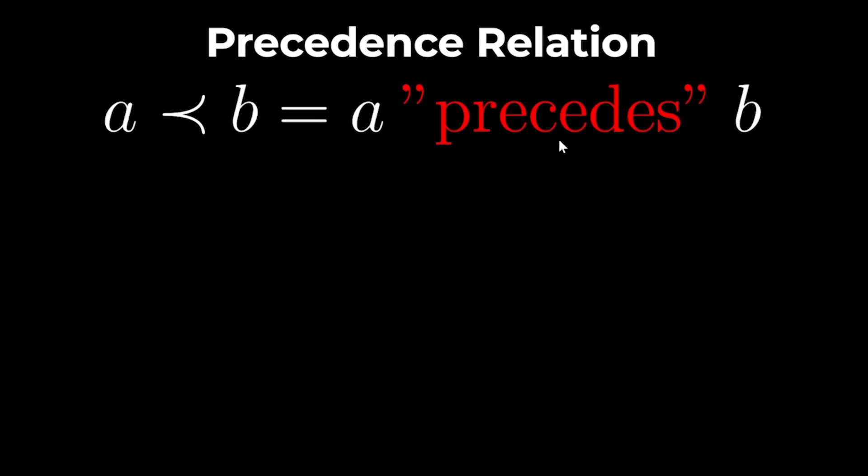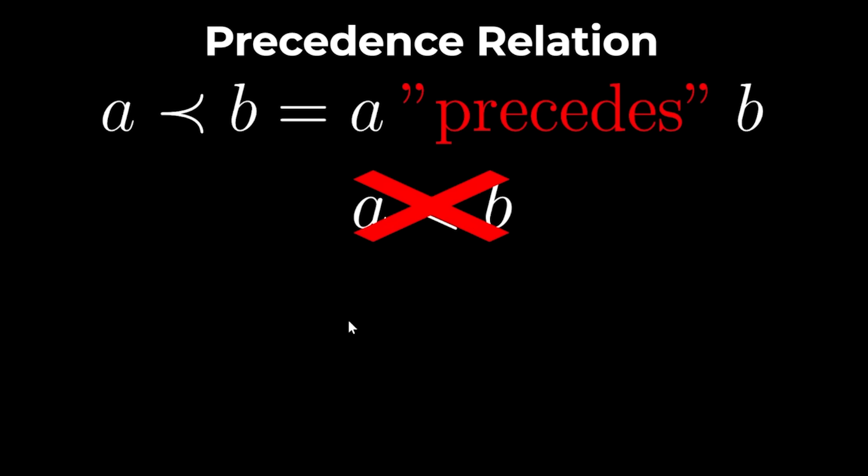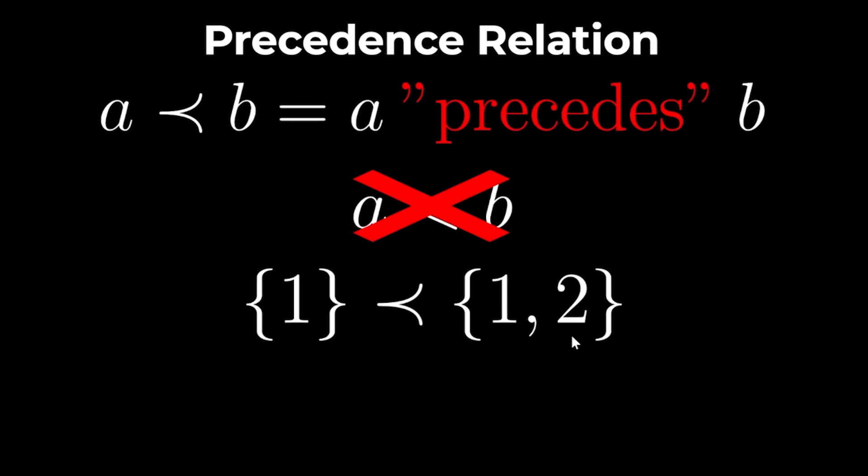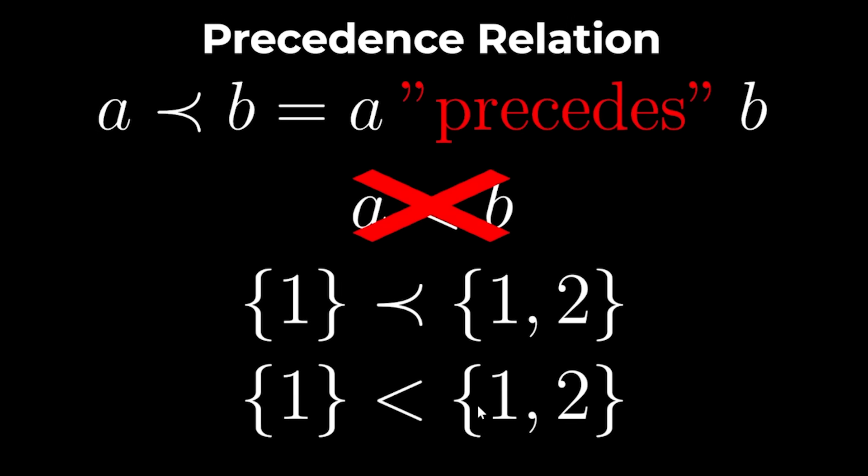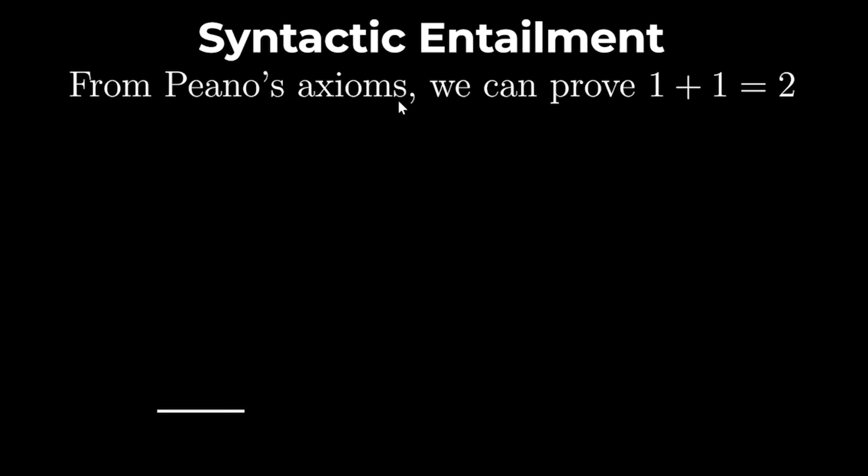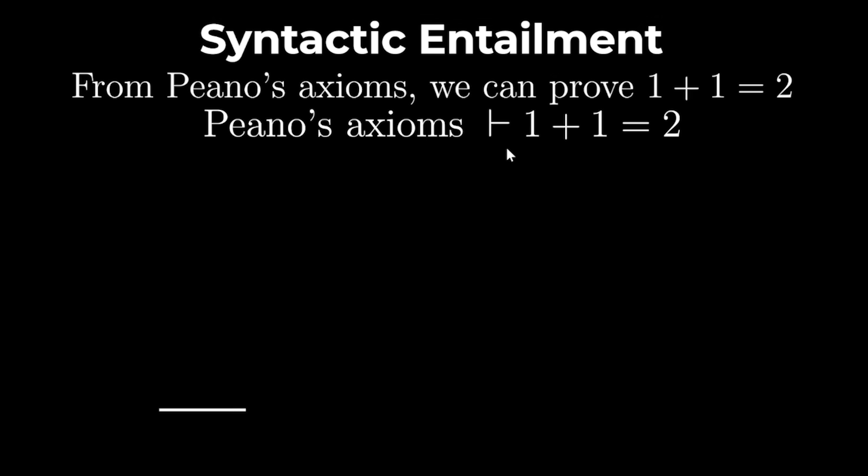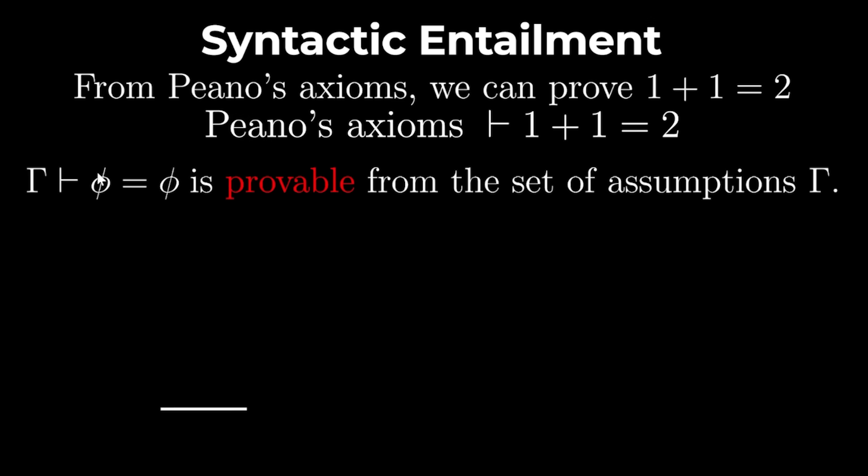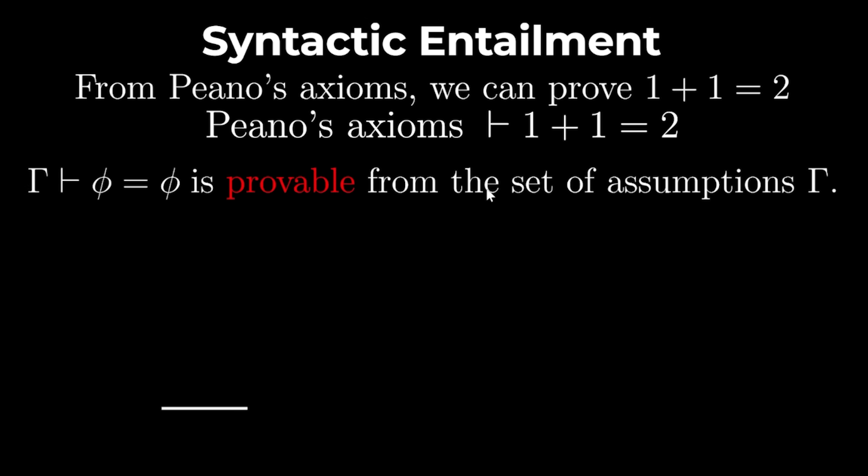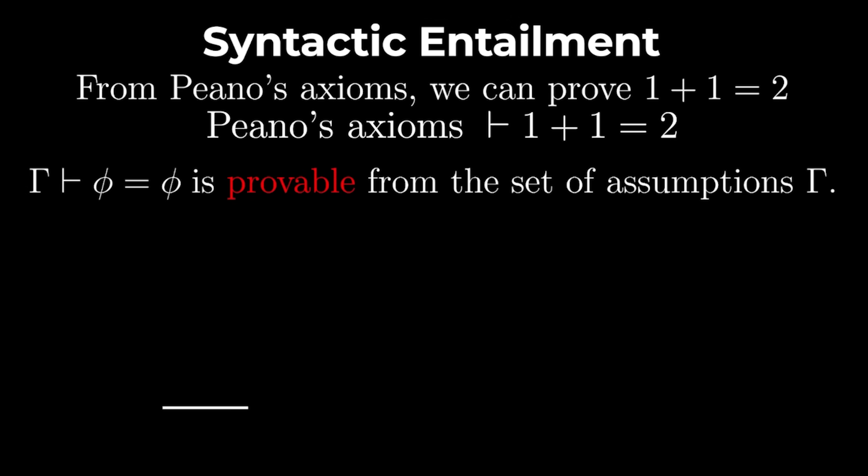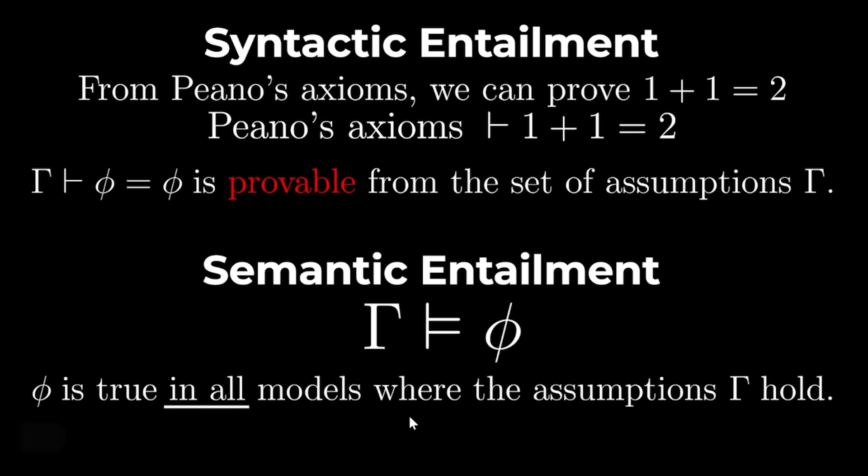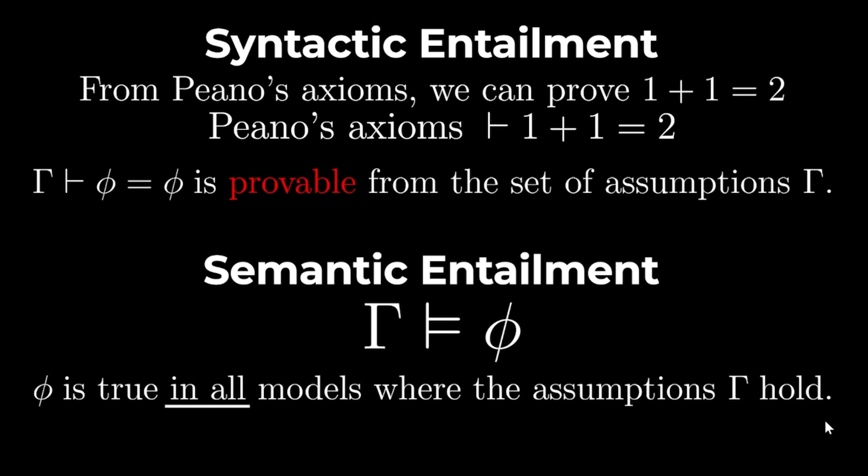If a precedes b, then a is in some way of lower order than b, but it doesn't necessarily mean that a is less than b. For example, we can write the set 1 precedes the set 1, 2, because 1, 2 has more elements. But that doesn't necessarily mean that 1 is less than 1, 2. Instead of saying that from Peano's axioms we can prove 1 plus 1 is 2, we can just say that Peano's axioms entails 1 plus 1 is 2. So the statement Gamma entails Phi means that Phi is provable from the set of assumptions Gamma. Semantic entailment just means that Phi is true in all models where the assumptions Gamma hold.